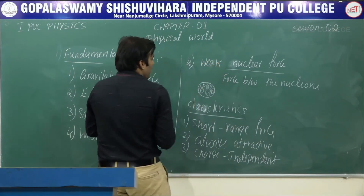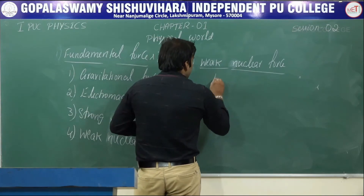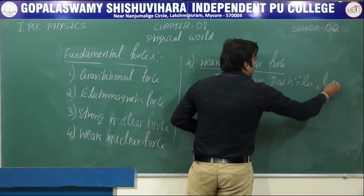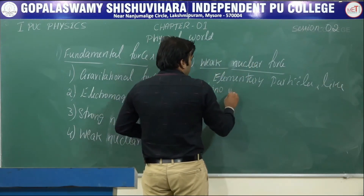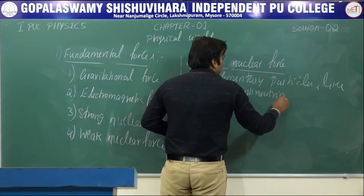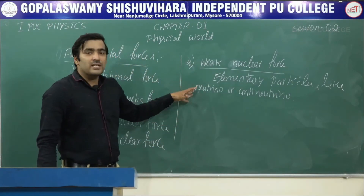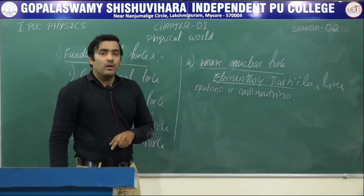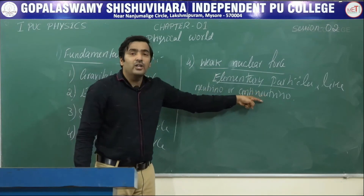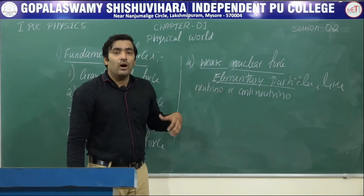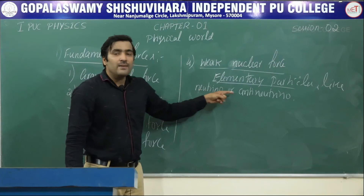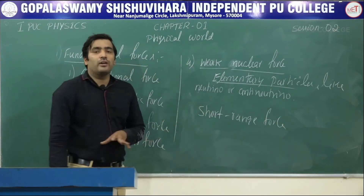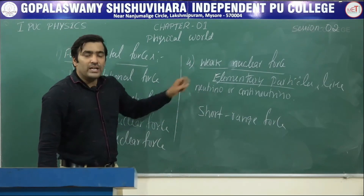The fourth fundamental force is weak nuclear force. It is a force that exists between elementary particles like neutrino and anti-neutrino at the time of radioactivity, specifically during beta decay. This force exists only in those special cases, and it is also a short-range force that can exist only inside the nucleus.